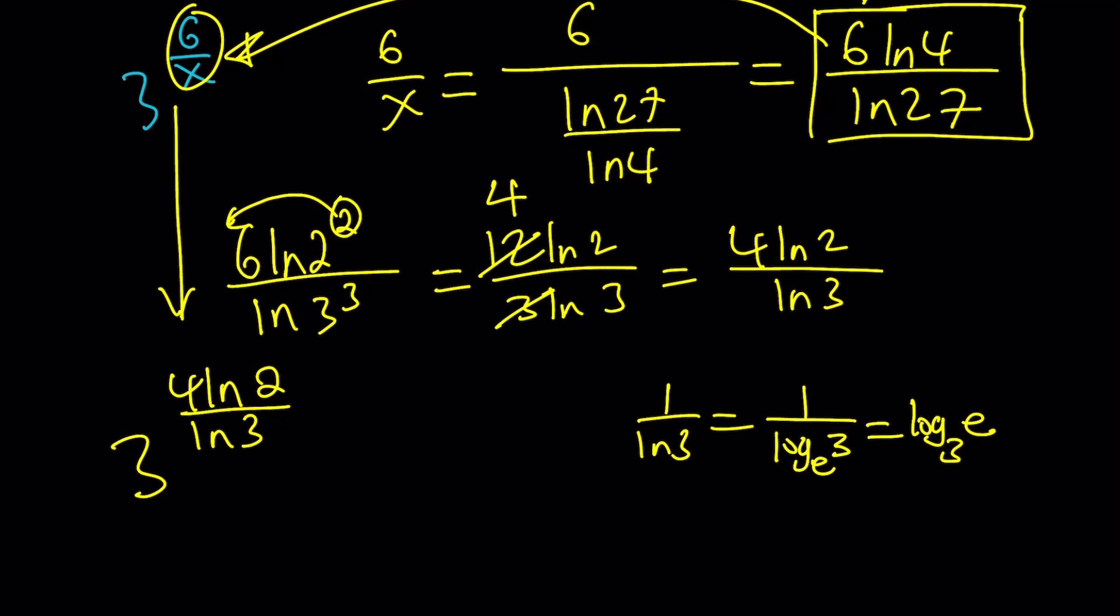When we do the reciprocal, log b with base a turns into log a with base b. They're kind of switched around. So now I have this expression instead of the 1 over ln 3.